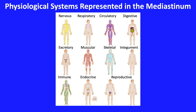The overwhelming number of structures listed should not surprise you. There are 11 physiological systems in our bodies, and it is possible to argue that all 11 are represented in some fashion in the mediastinum. Of course, the circulatory system is the one we tend to think of most when we think of the mediastinum, and it is the system we will focus on with the rest of the lecture.